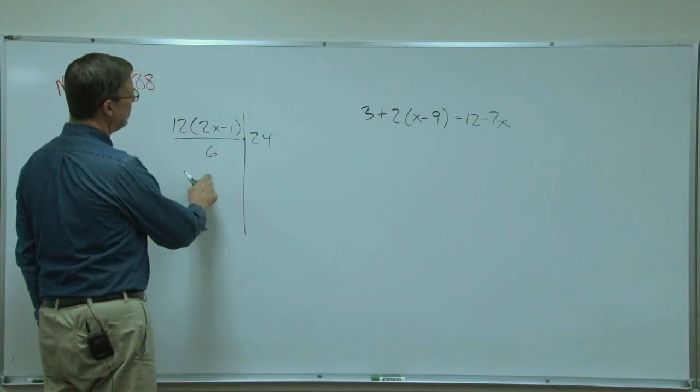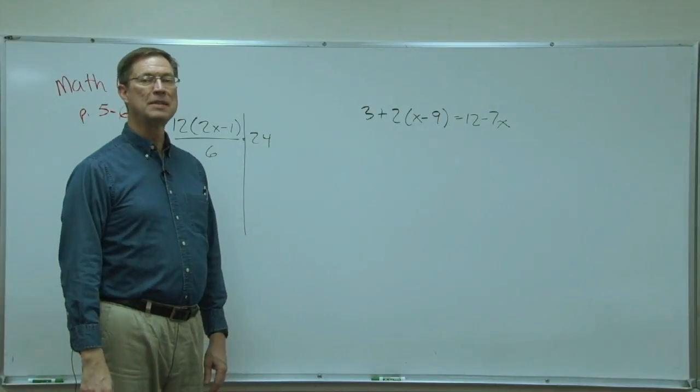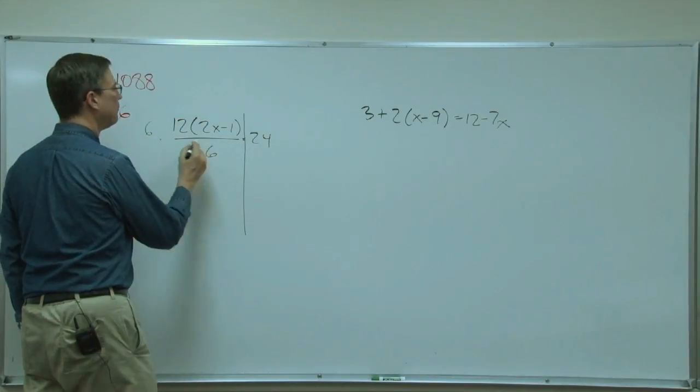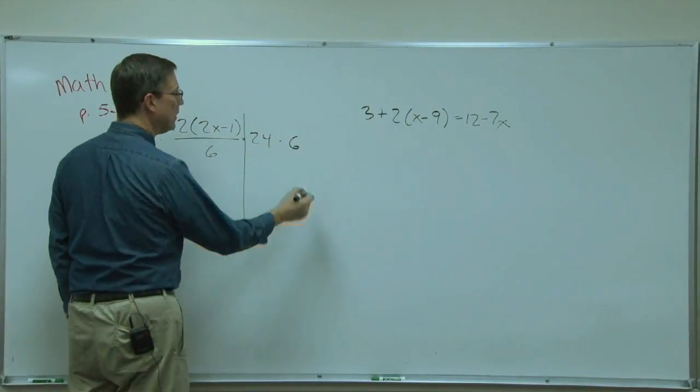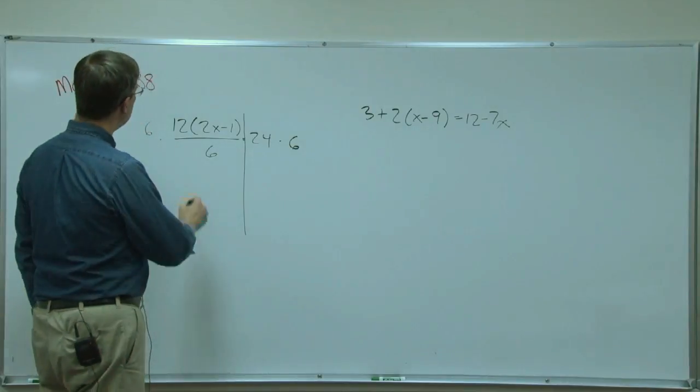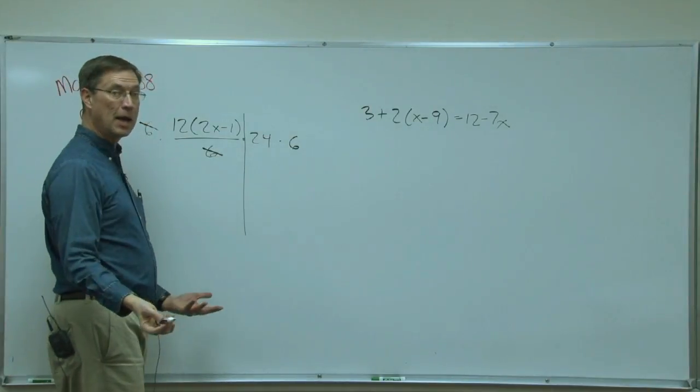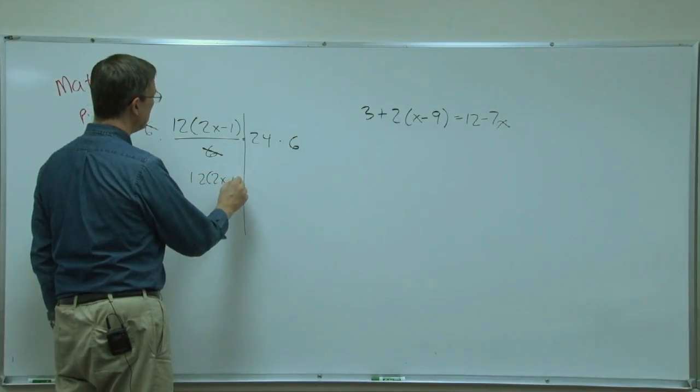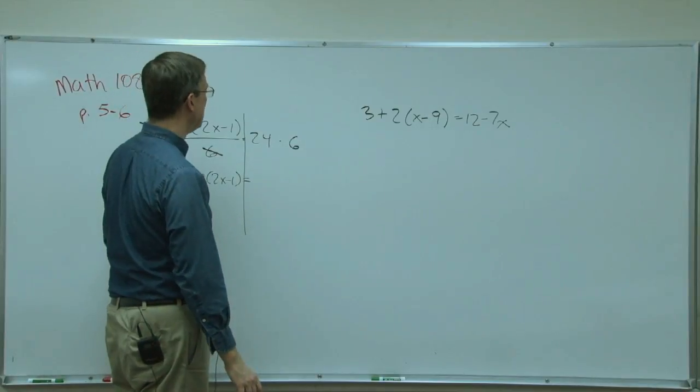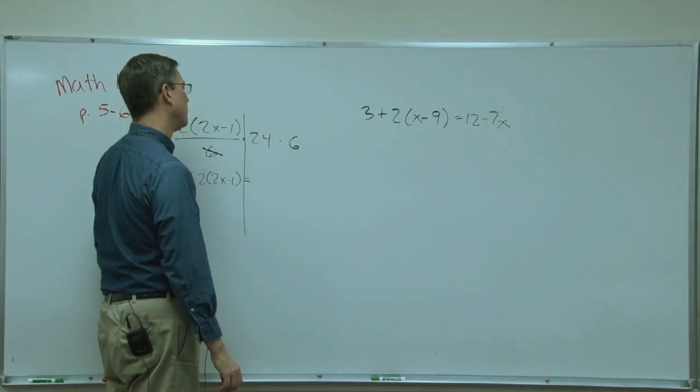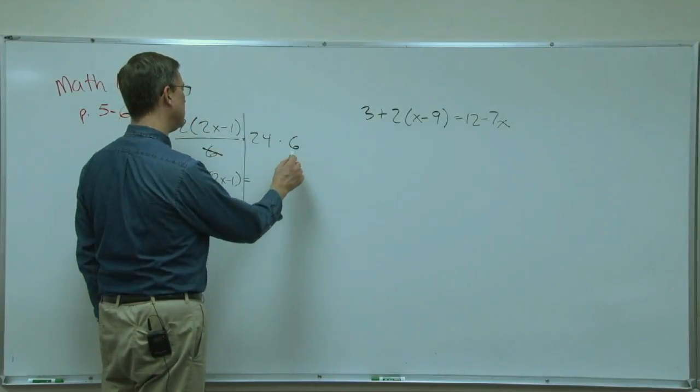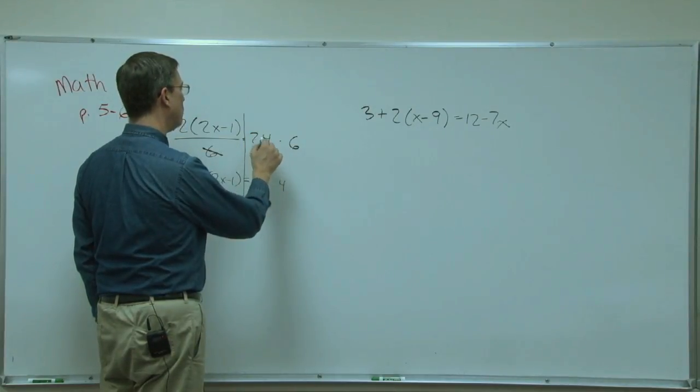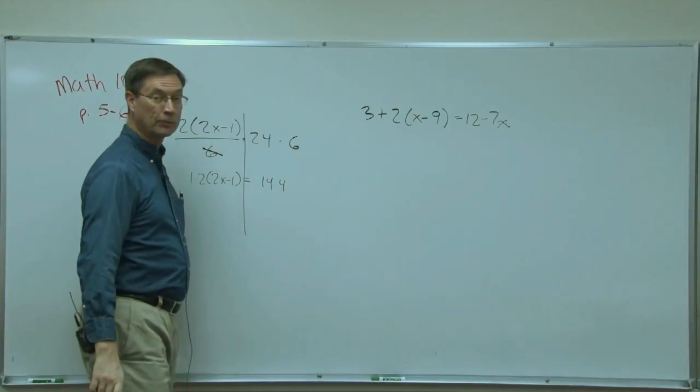The first thing I want to do is get rid of the dividing by six. So if I multiply by six, I have to do the same thing on the other side. Now the six here will cancel, which leaves me with 12 times 2x minus 1 equals 24 times 6. Let's see, I carry the 2, so 144.